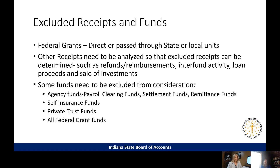Always keep in mind what must be excluded. If you're seeing federal grants — either directly from the federal government or passed through the state or other local units — those must be excluded. Other receipts should always be analyzed; never automatically include them, because refunds, reimbursements, interfund activity, loan proceeds, and sale of investments all get classified under 'other' and are excluded. Some funds you can simply exclude entirely: agency funds, payroll clearing funds, settlement funds, remittance funds, self-insurance funds, private trust funds, and all federal grant funds.